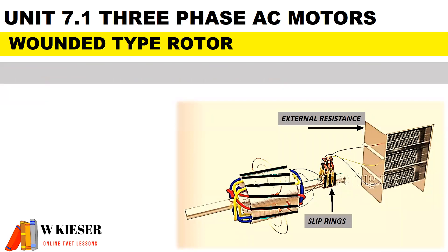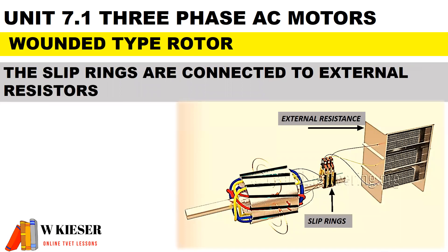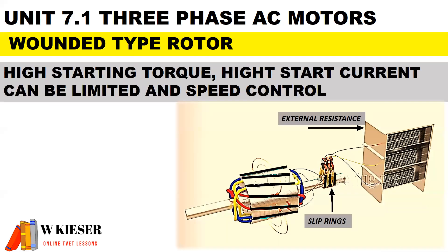For the wound type rotor, also known as the slip ring rotor, the rotor windings are connected in star to the slip rings. The slip rings are connected to external resistors, which allow for variable speed control. It is mainly used in cranes and elevators. In terms of the advantages, it has high starting torque, high starting current can be limited, and we have variable speed control thanks to the external resistors connected to the slip rings.